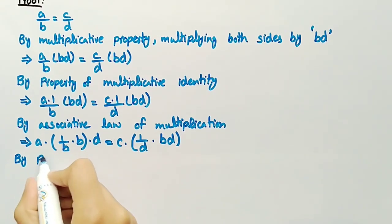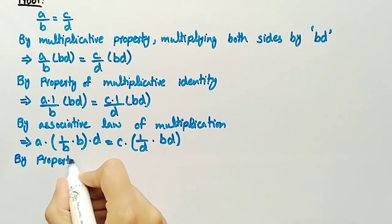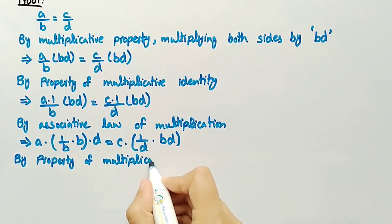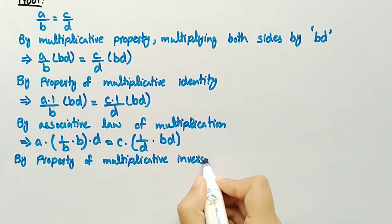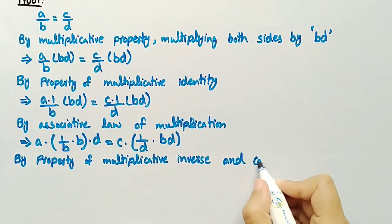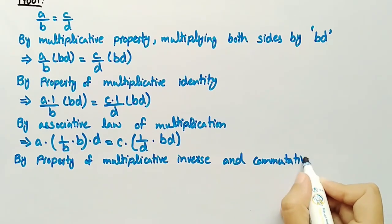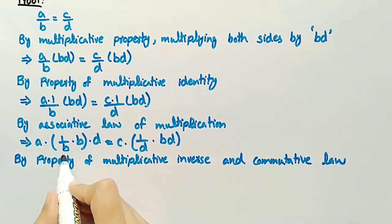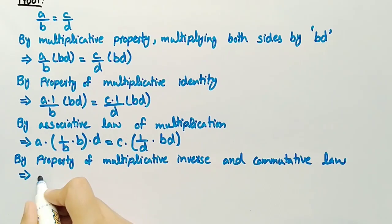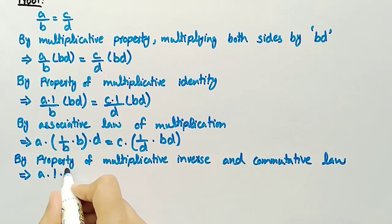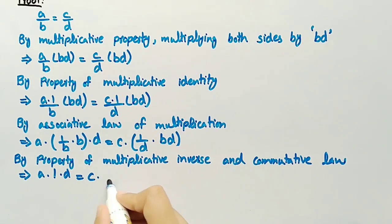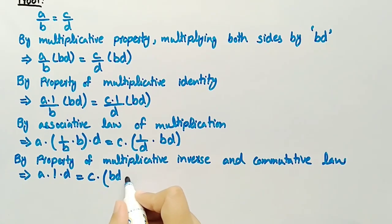By the property of multiplicative inverse and commutative law, we can write it as a·(1/b). Since 1/b and b are multiplicative inverses of each other, their product is equal to 1. So it can be written as a·1·d equal to, and here by using commutative law, c·b·d·(1/d).